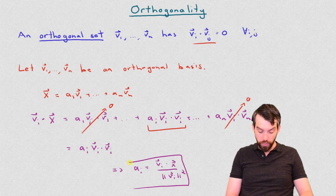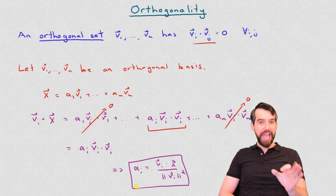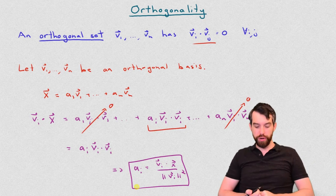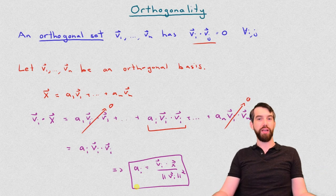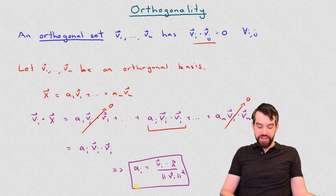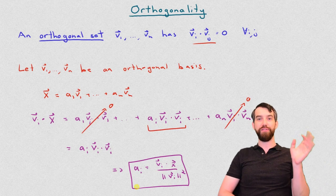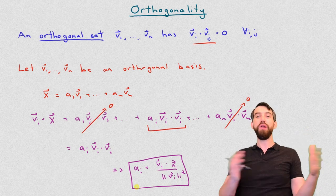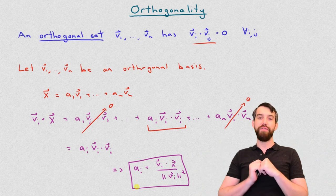Notice what this formula is doing: for any coefficient a_i, I can immediately compute it as long as I can do two dot products. Dot products are quick and easy — one on the top, one on the bottom — and so I'm able to figure out every coefficient in my expansion easily, without having to go and do any row operations.